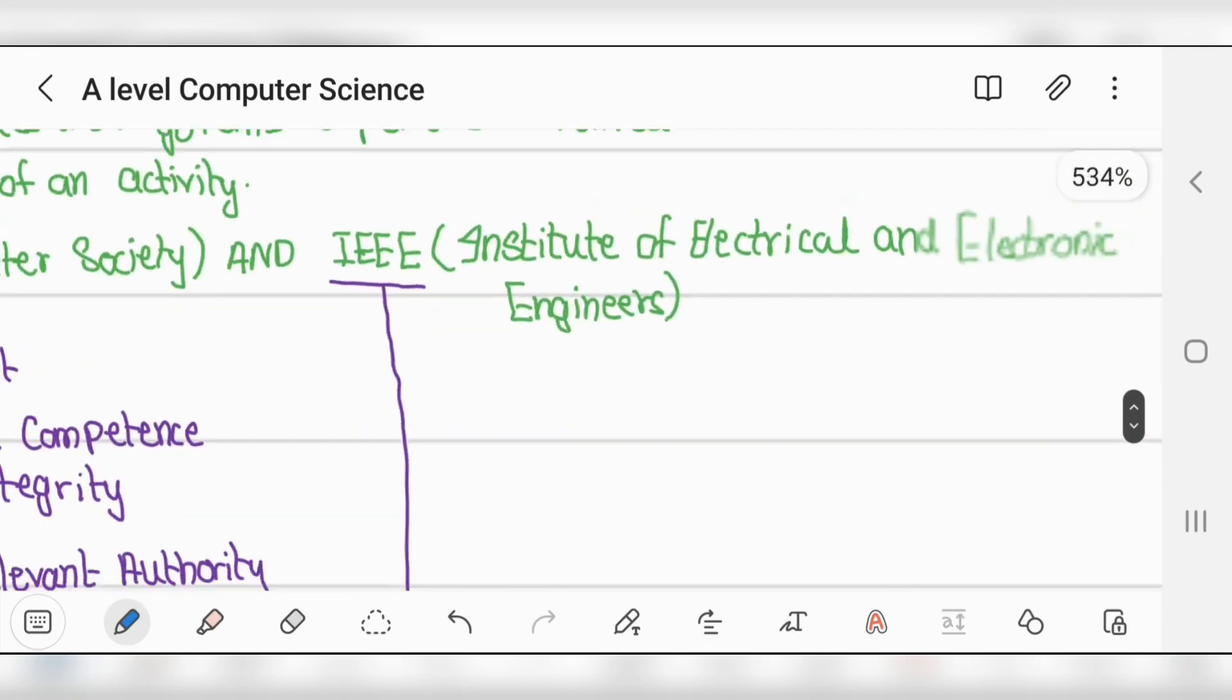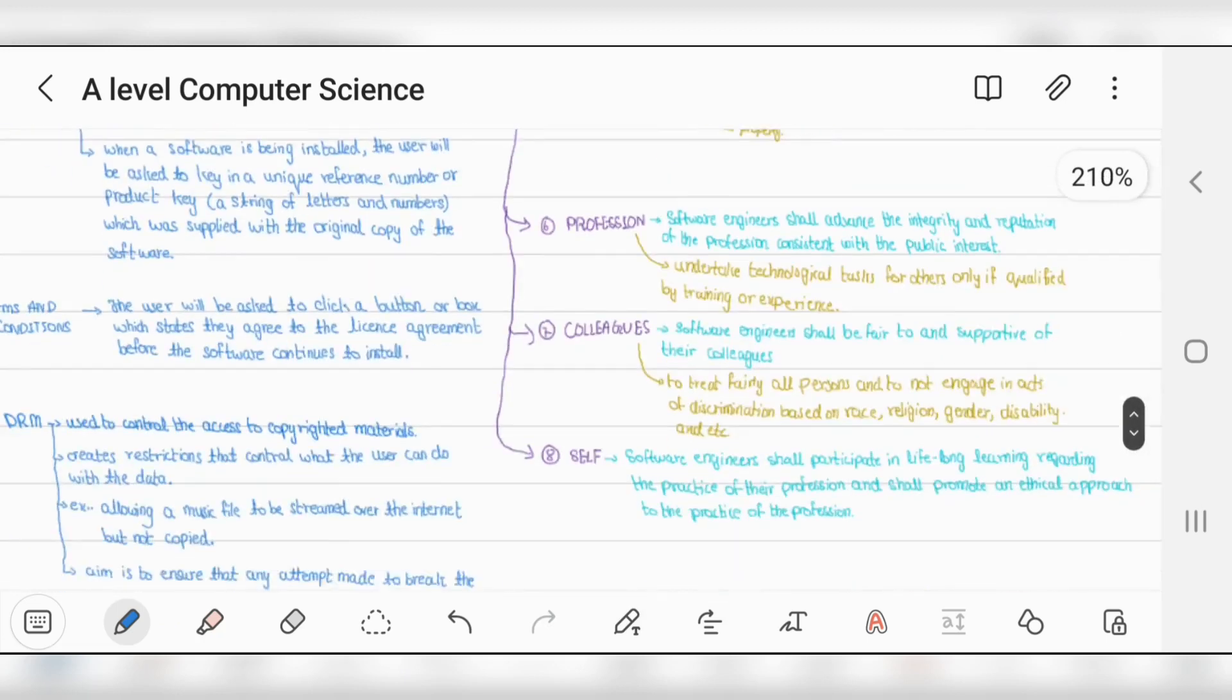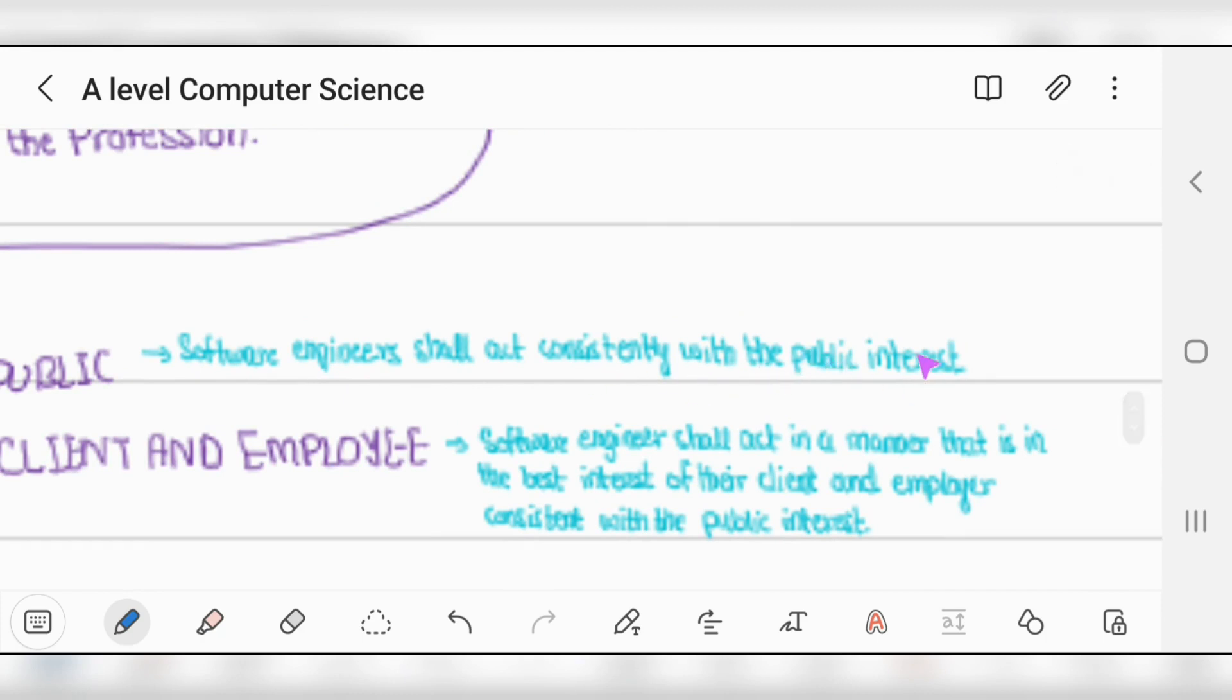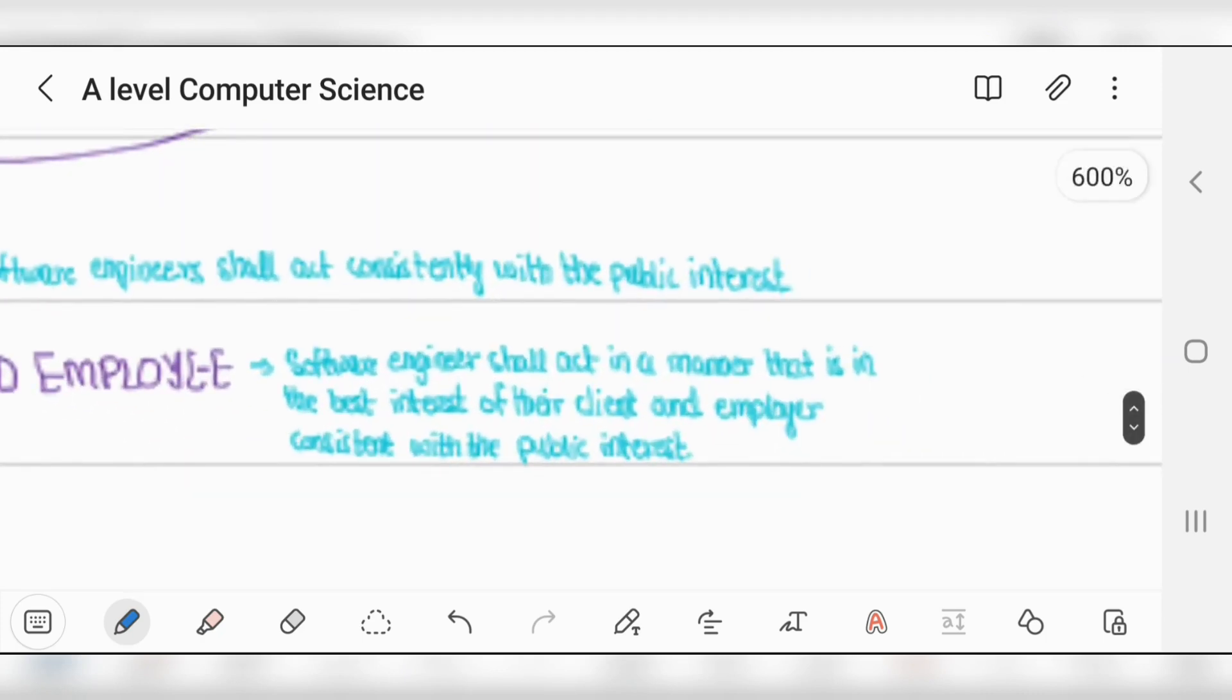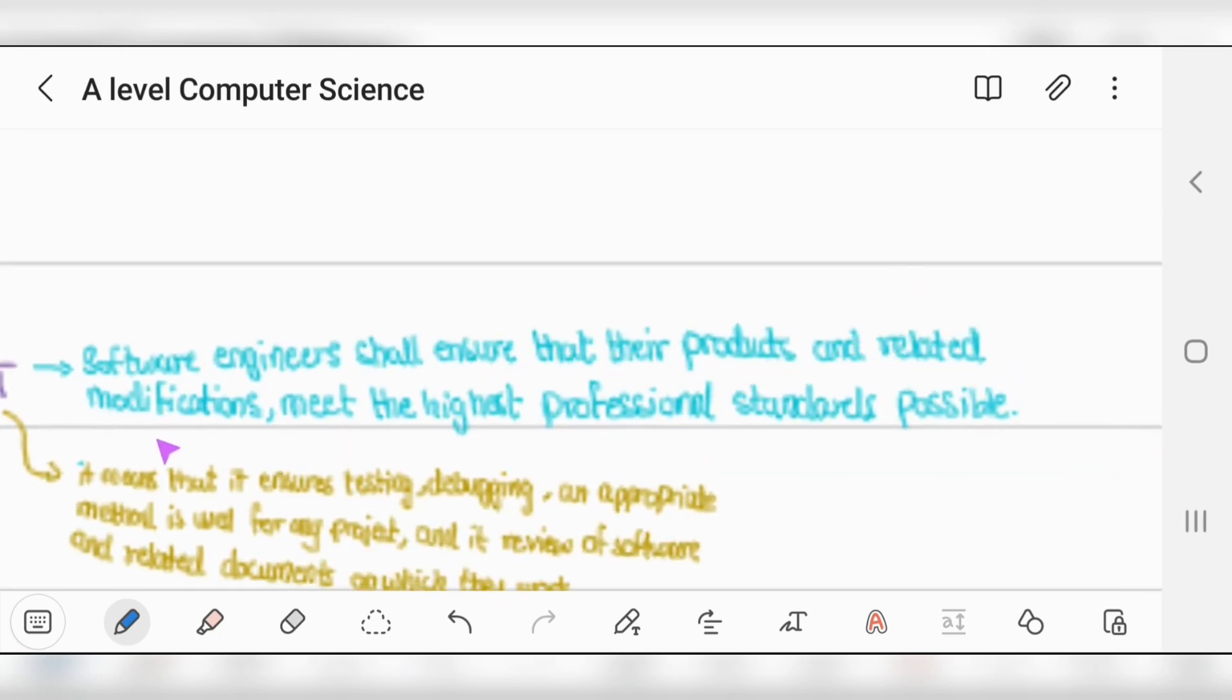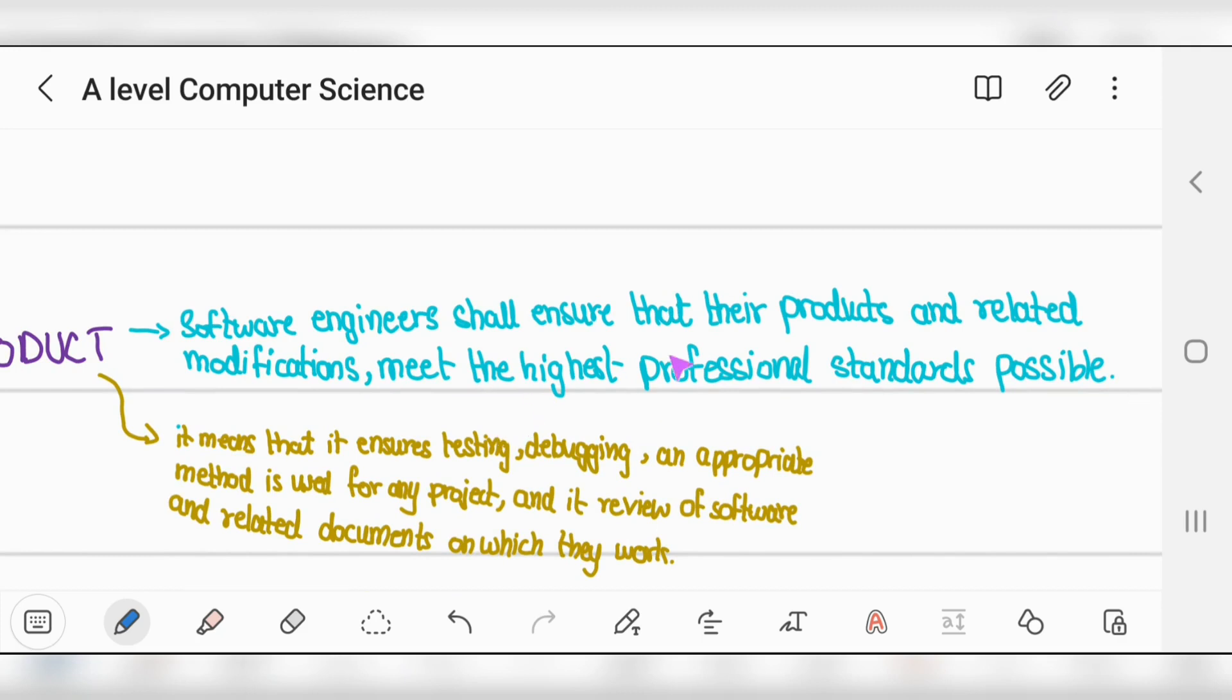IEEE is Institute of Electrical and Electronics Engineers with eight rules. Number one: software engineers shall act consistently with public interest. Two: client and employee - act in the best interest of their client and employer consistent with public interest. Three: product - ensure their products meet the highest professional standards possible, using appropriate methods for testing, debugging, and review.